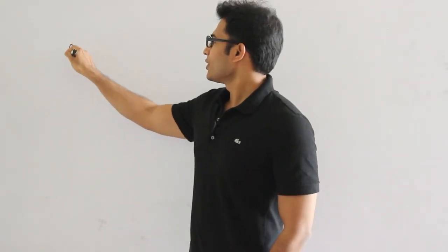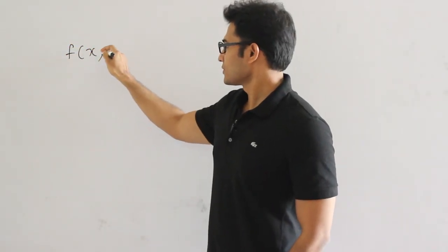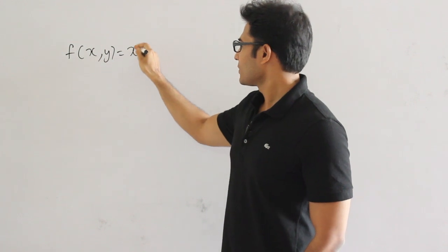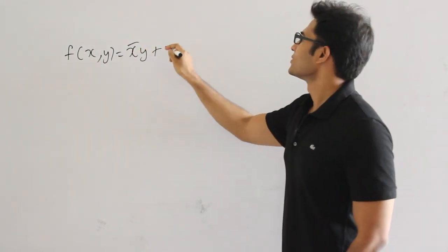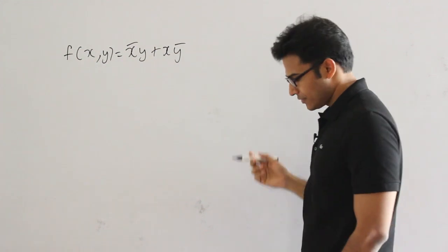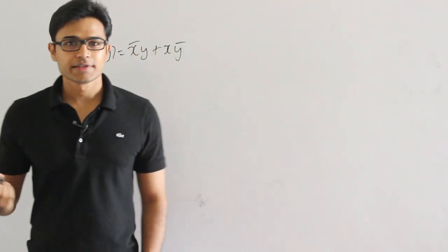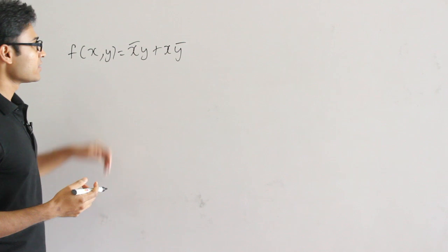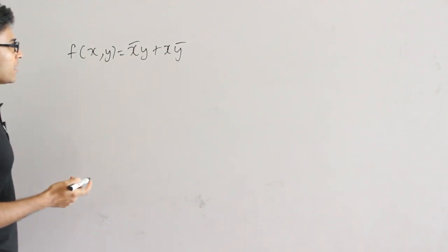Let's see this function f of x equal to x'y plus xy'. So what is that function? You know that it is XOR. Now I want to find out whether this XOR is functionally complete or not.